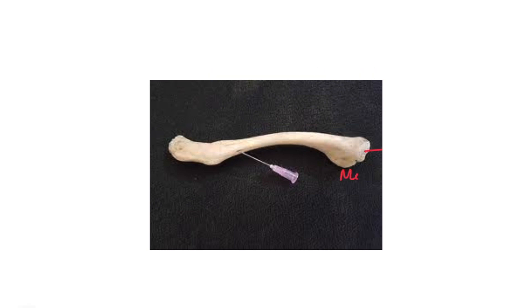Here you can see the medial end of the clavicle — the sternal end — and the lateral end, which is the acromial end. The direction of the nutritional foramen, as pointed out by the needle, is directed laterally. This means the growing end of the clavicle is medial — the sternal end is the growing end.